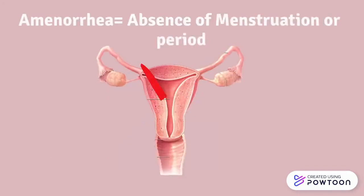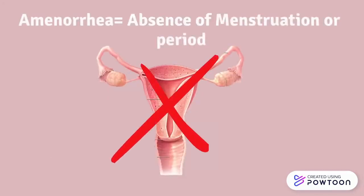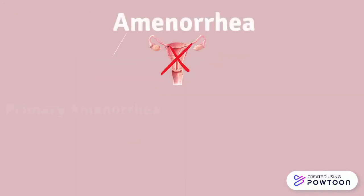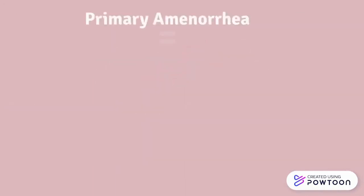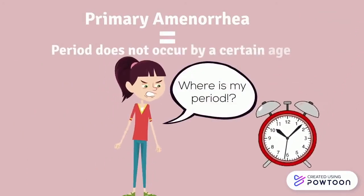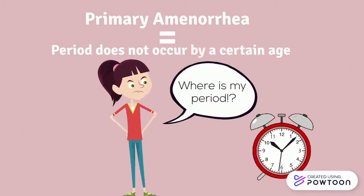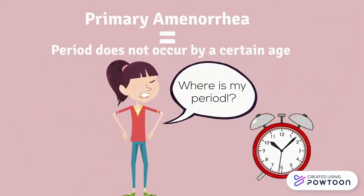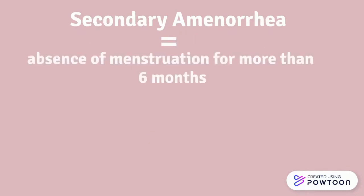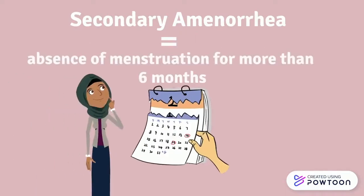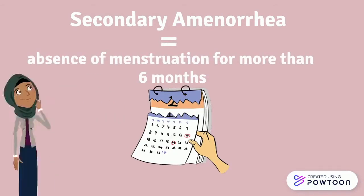Amenorrhea is characterized by the absence of menstruation, also known as a period. There is primary and secondary amenorrhea. Primary amenorrhea occurs when there is a failure to menstruate by a certain age, usually the age of puberty, whereas secondary amenorrhea is the absence of menstruation for more than 6 months in someone who is having a normal menstrual cycle. The focus of this video will be on secondary amenorrhea.